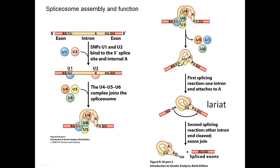This whole process is catalyzed by the snRNPs. The snRNPs bind to different regions of the intron: U2 binds to the branch point A, and U1 binds to the splice donor at the beginning of the intron. Once those two are bound and the intron has been identified, the three other snRNPs bind and form a complex that catalyzes the two reactions — the A attacks the G making the lariat, and then the OH at the end of the first exon attacks the start of the next exon, splicing the two exons together and releasing the lariat.